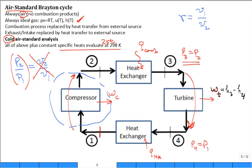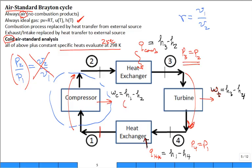That should make sense — you've done the first law for these open system components before. The two negative quantities — the heat rejection Q and the compressor work W_C — are a little more challenging conceptually but follow the same first law approach. W_C = h1 − h2 will be negative since the compressor consumes work rather than producing it.